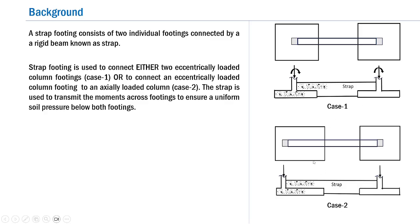In Case 2, just because of its placement, the first footing is subjected to an eccentric load whereas the second one is subjected to only an axial load. The function of the strap here is to distribute the moment effects to the second footing so that we achieve, as far as possible, a uniform soil pressure distribution below each footing.